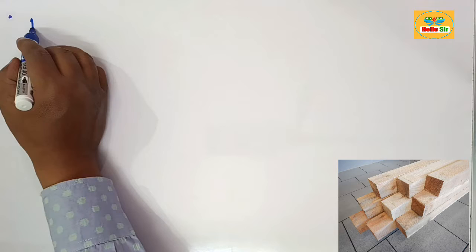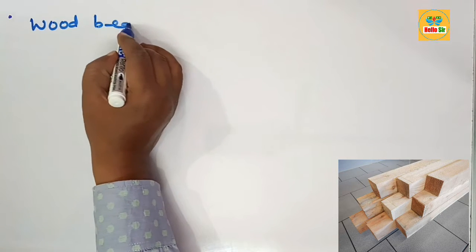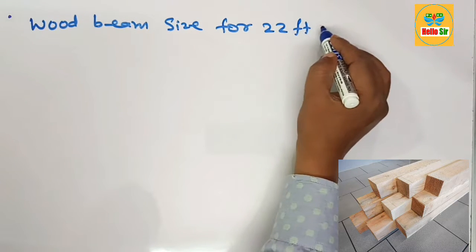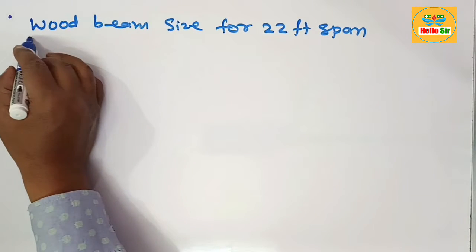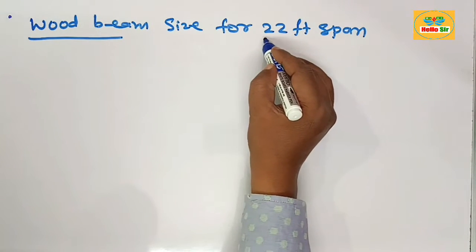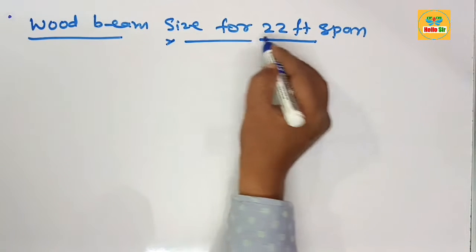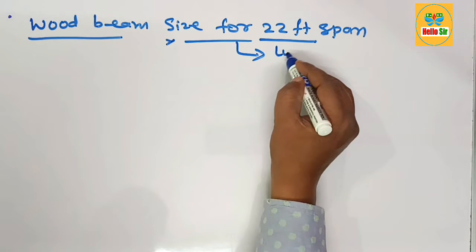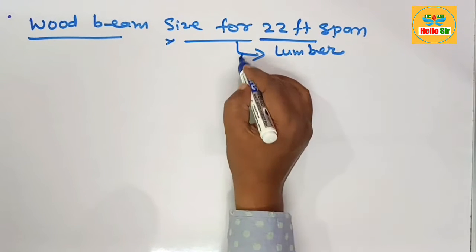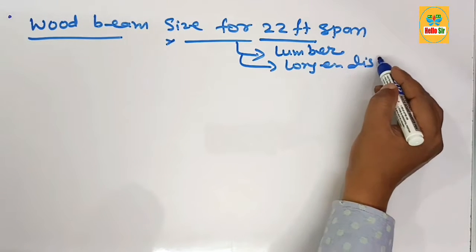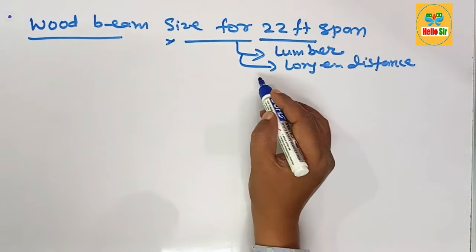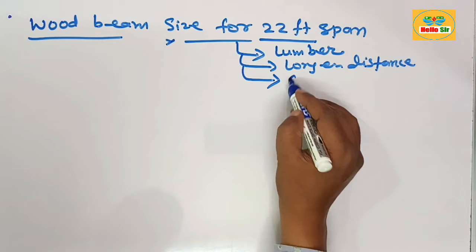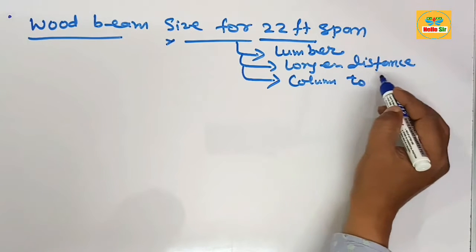In this video, we learn about wood beam size for a 22-foot span — finding the correct wood beam size required to span 22 feet. A wood beam is a composite piece of dimensional lumber required to span longer distances. It can support dead load, live load, and seismic load of the structure, transferring the weight down to the column and finally to the foundation.